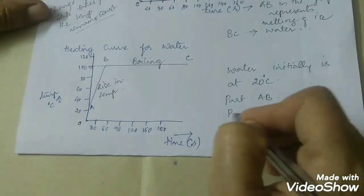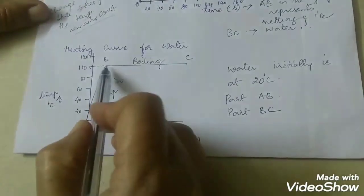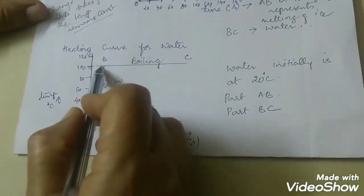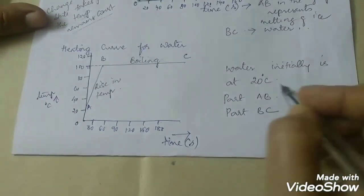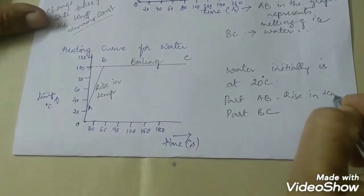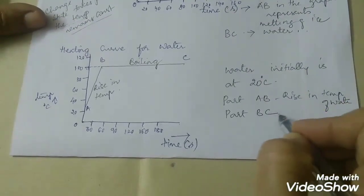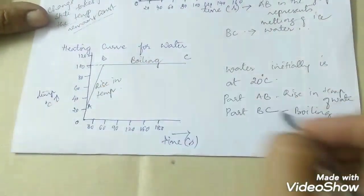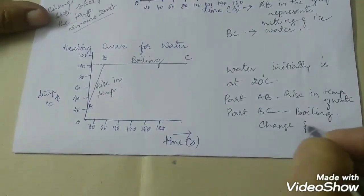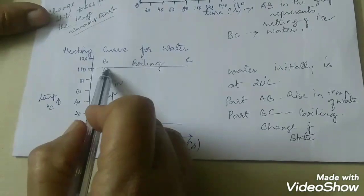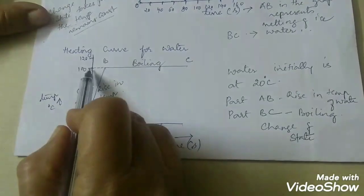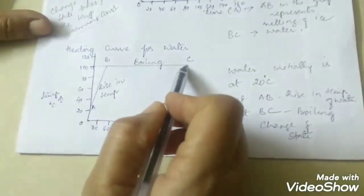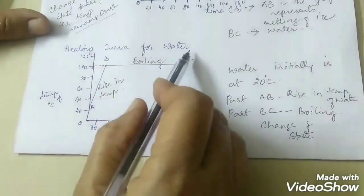In this part of the graph, part BC, there is a change in time but the temperature is remaining constant. Part AB represents rise in temperature of water, and part BC represents boiling. This is called change of state — water is converted into steam at 100 degrees Celsius and the temperature remains constant. Though the time keeps changing, the temperature remains constant. This is the heating curve for water.